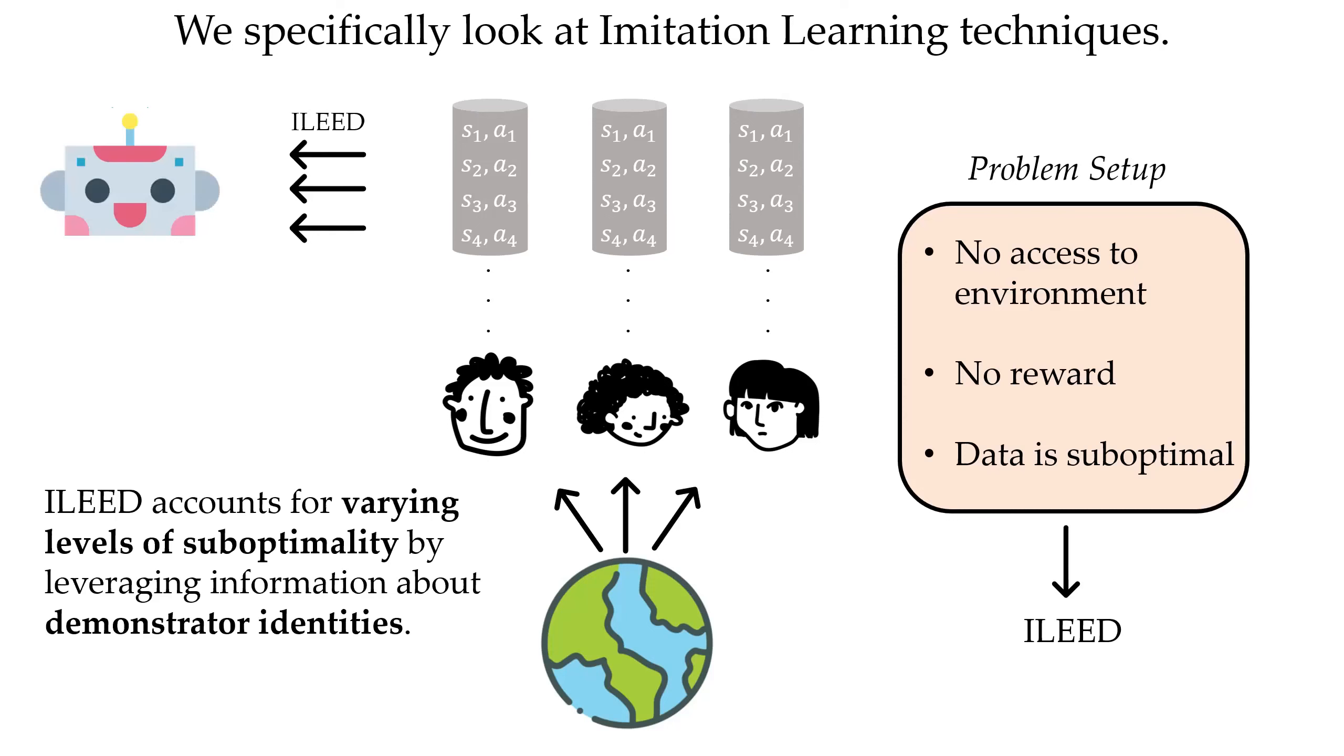ILEAD takes advantage of the demonstrator identities and in addition to learning a policy, it tries to estimate the expertise of each demonstrator in the dataset. Some of them may be novices, in which case we want to ignore the recommendations. Some intermediates, while others may be experts whose recommendations should be weighted more.